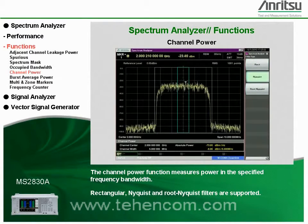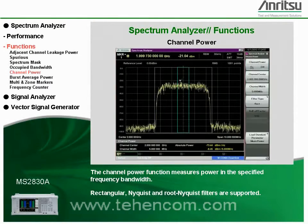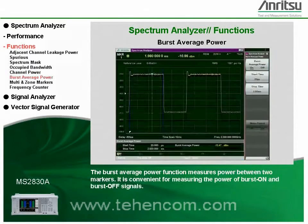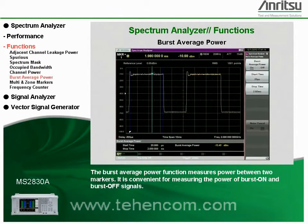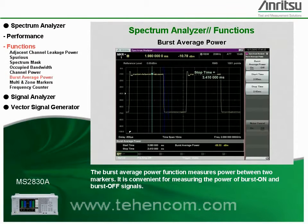Rectangular, Nyquist, and root Nyquist filters are supported. The burst average power function measures power between two markers. It's convenient for measuring the power of burst-on and burst-off signals.